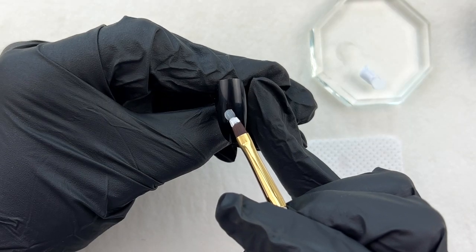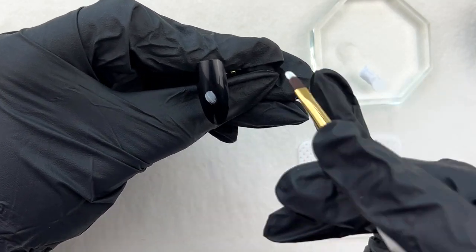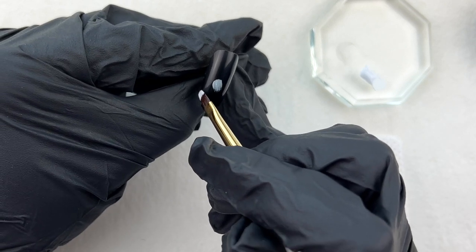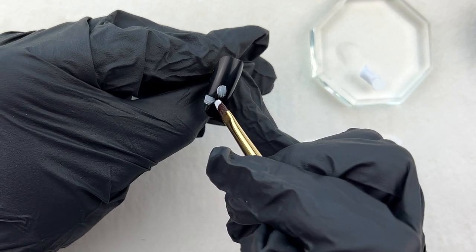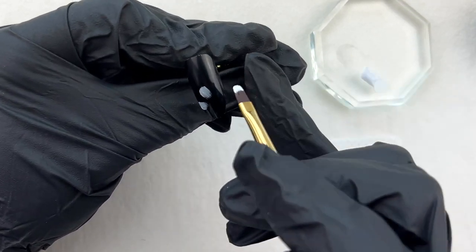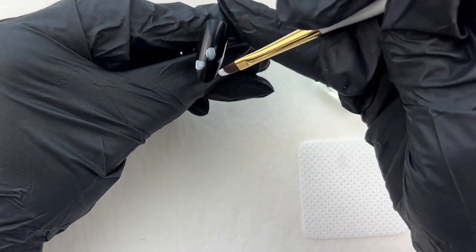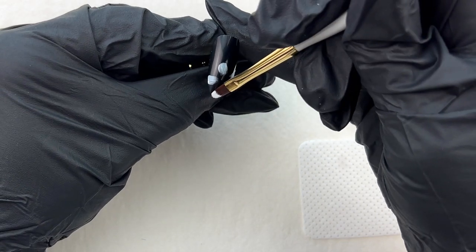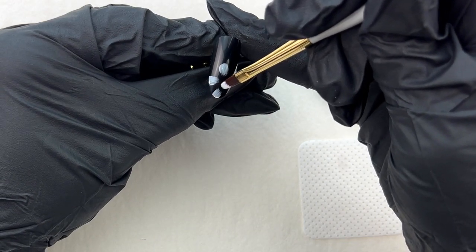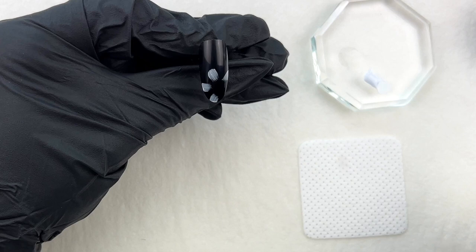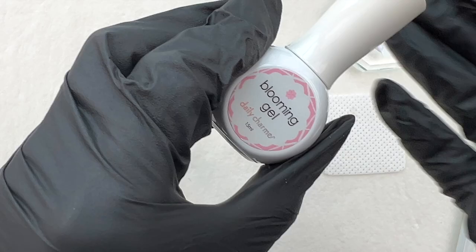I am starting by drawing the petals. These petals are going to be the outside of the flower. I am pressing down the brush and releasing it. When you draw a flower, keep in mind to always be conscious that the petals grow from the center. After drawing the first layer of the flower, cure it for 30 seconds.